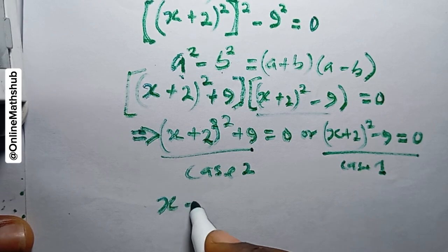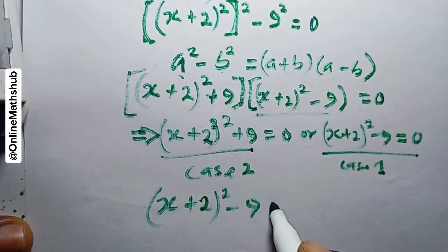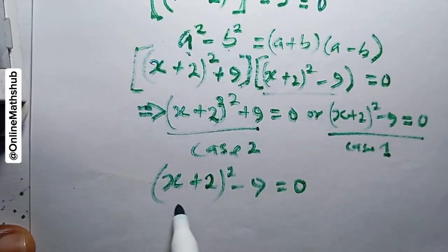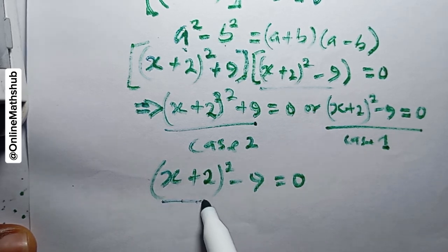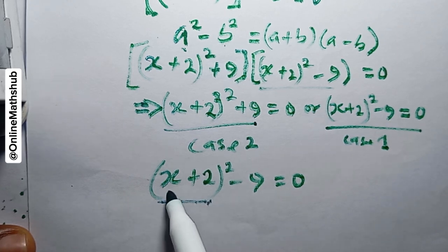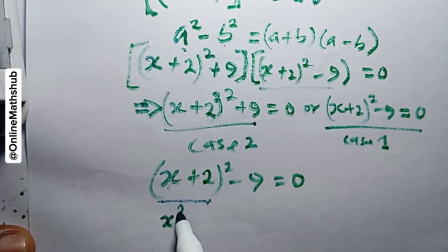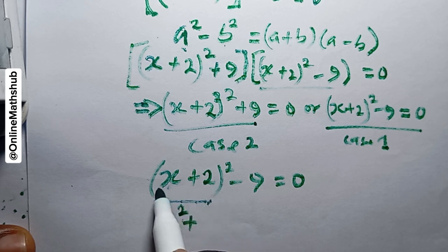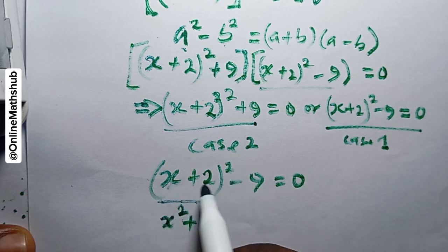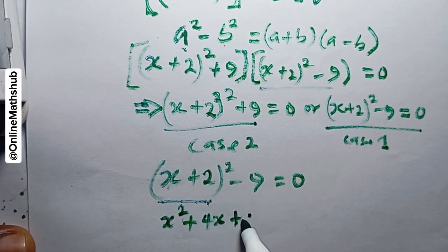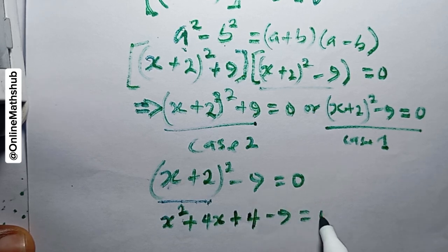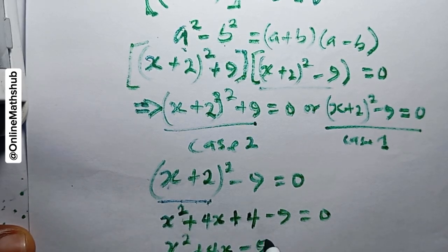In Case 1: (x + 2)² - 9 = 0. Expanding the bracket using the standard method: raise the first term to power 2 giving x², then 2 times x times 2 giving 4x, then 2² giving 4. So we have x² + 4x + 4 - 9 = 0.